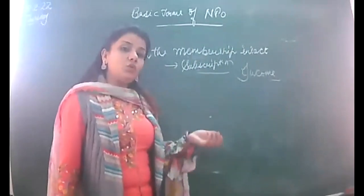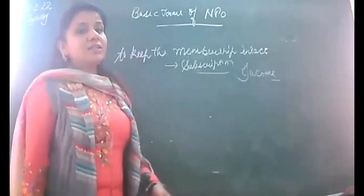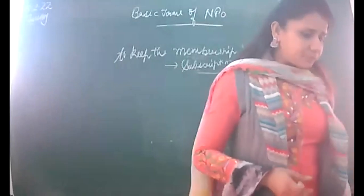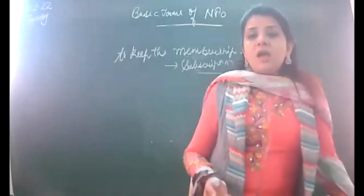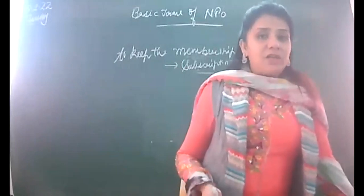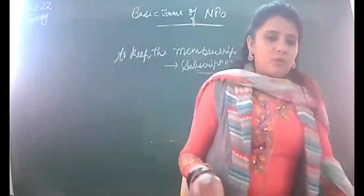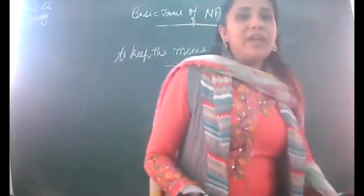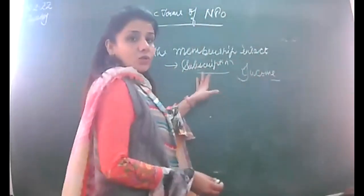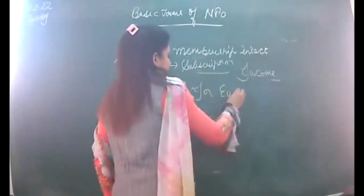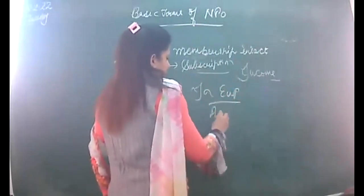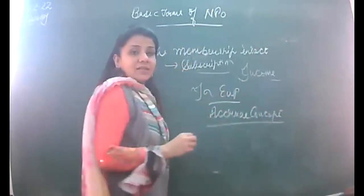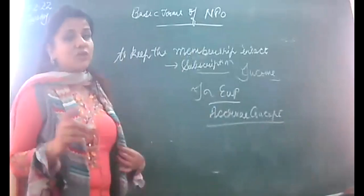If you have outstanding subscription, then you have accrued income—it will become an asset. If you have advanced subscription received from members, that will be a liability for the NPO. The subscription may be received quarterly, half-yearly, or annually. Subscription is shown in the income and expenditure account. Because the income and expenditure account follows the accrual concept, only income and expenditure related to the current year is to be recorded.